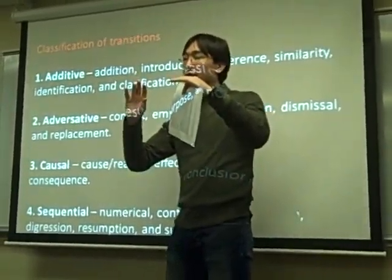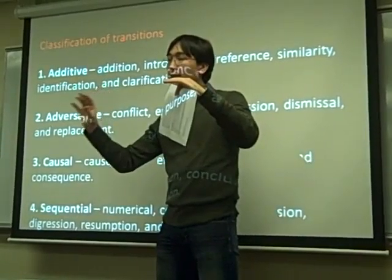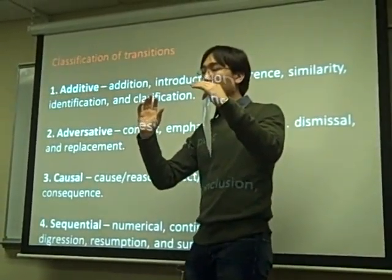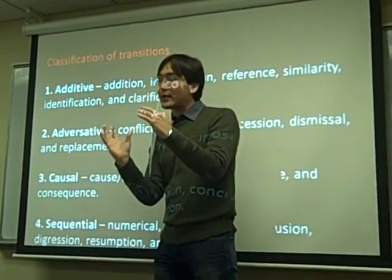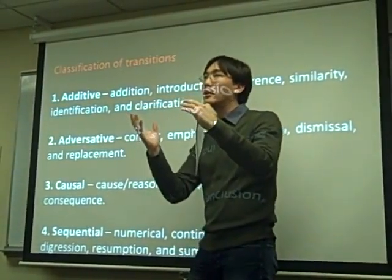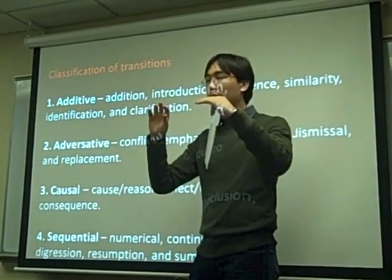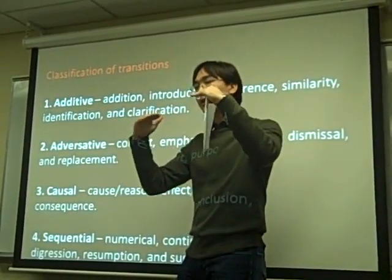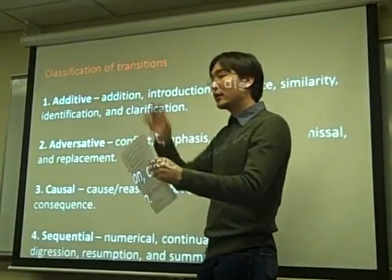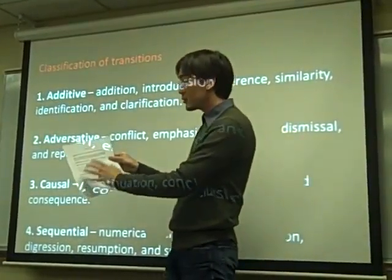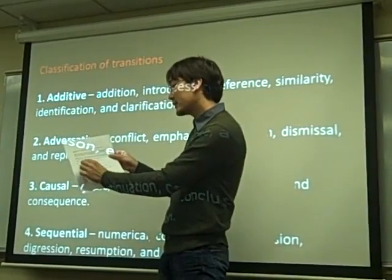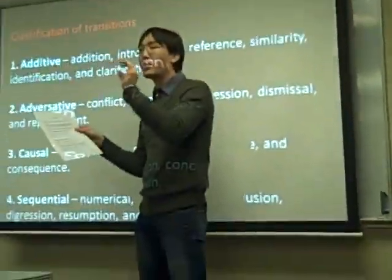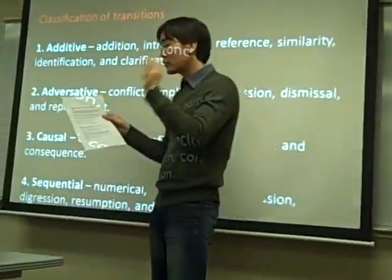You have one idea and then you see another point that kind of contradicts it, and you don't want to write a paragraph that will be like raw material. You want to make a smooth transition and see how these two points and two thoughts contradict each other. You can rely on this handout and see the list of transitions and use the appropriate one to make your sentence sound stronger.